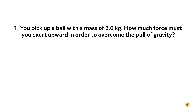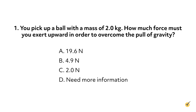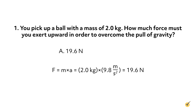Now that we've learned how to deal with forces, let's check our knowledge with a couple of questions. Number one: you pick up a ball with a mass of 2.0 kilograms. How much force must you exert upward in order to overcome the pull of gravity? The correct answer is A: 19.6 newtons. F equals m times a, which equals 2.0 kilograms times 9.8 meters per second squared, which equals 19.6 newtons. Note that gravity is the only force acting against your upward pull.